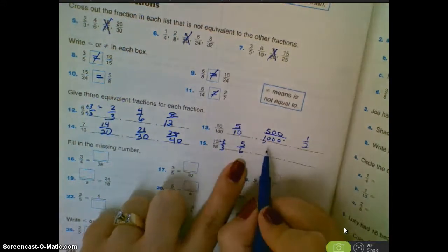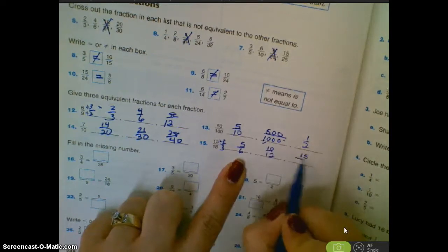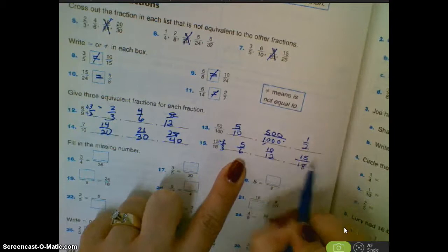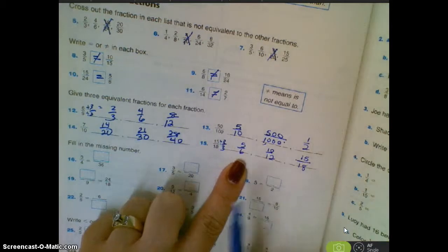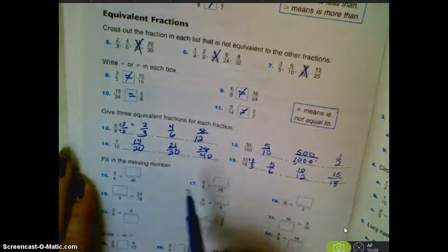And then I can double this and I can get ten-twelfths. And I can triple that and get fifteen out of eighteen if I wanted to. And again, yours might be different numbers as long as they're equivalent to fifteen-eighteenths. And you can explain why.